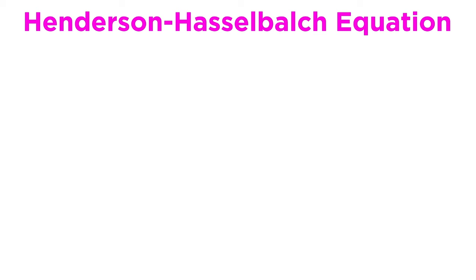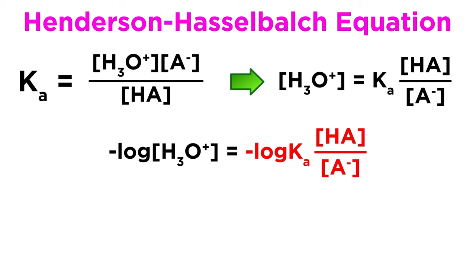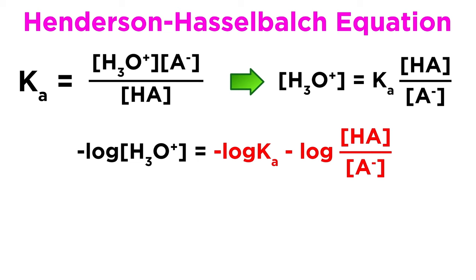If we start from the Ka expression for a generalized acid, we might want to solve for hydronium concentration in order to discuss the pH of a solution. To do this, we multiply both sides by the concentration of HA, and divide both sides by the concentration of A-. That will give us this. Now we know to get pH we simply take the negative log, so let's take the negative log of both sides. The log of the product on the right side can become the sum of two different logs because of the rules of logarithms, so this is what we end up with.